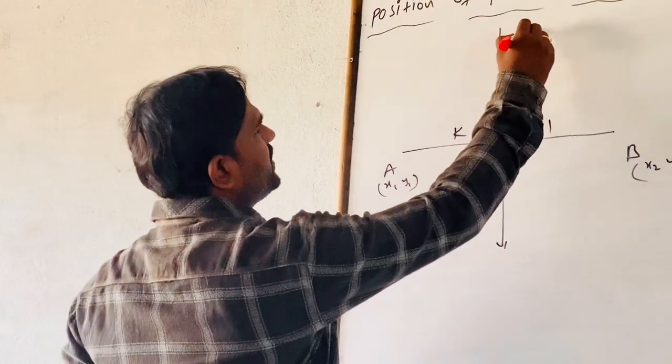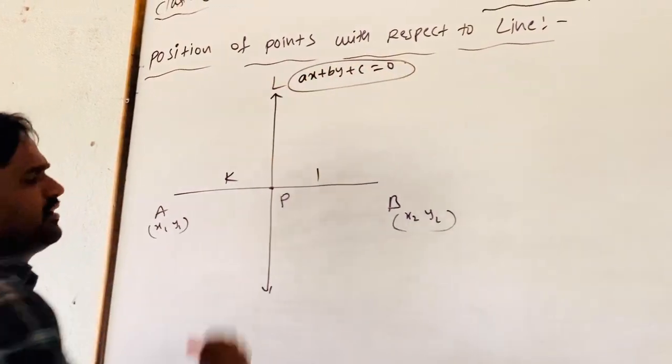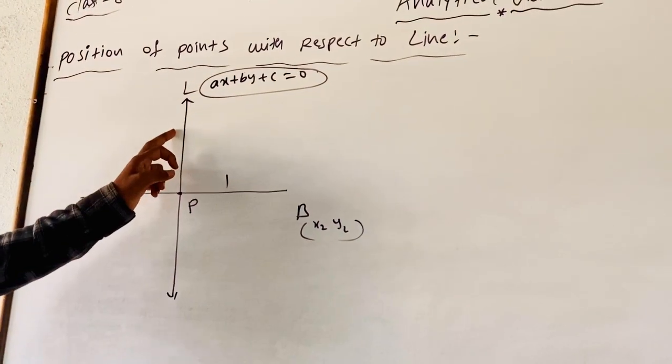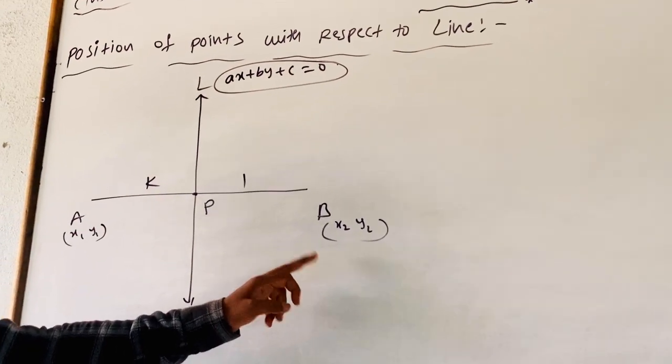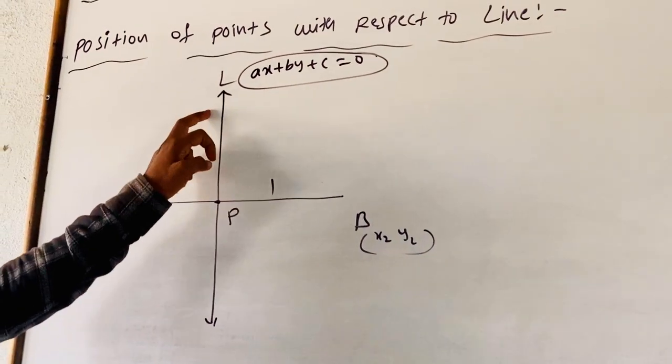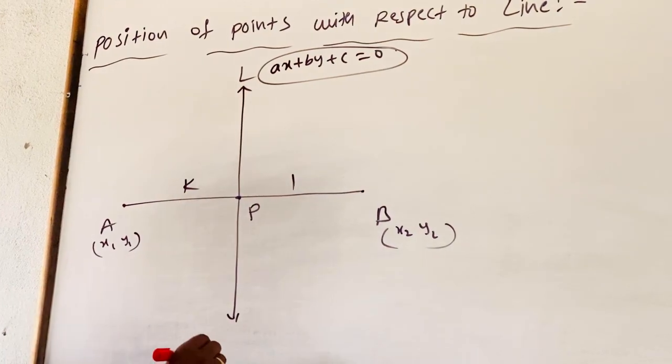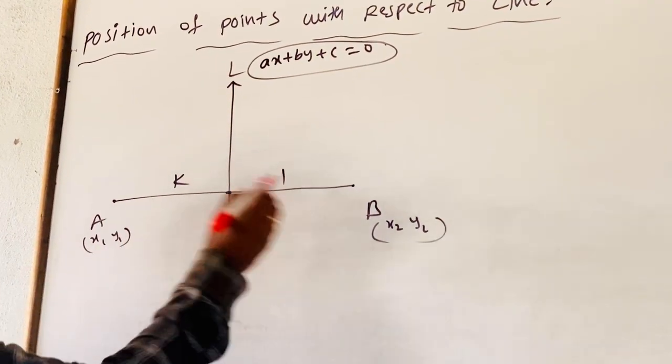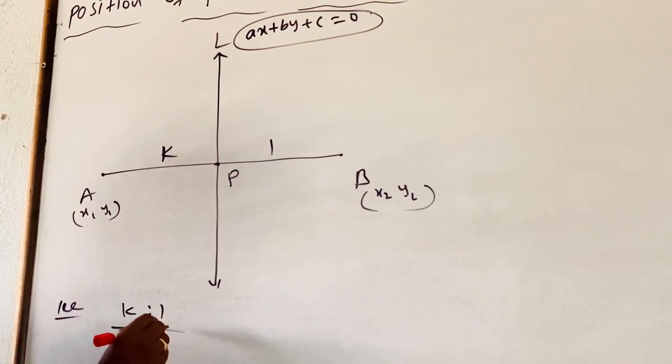Let L: AX plus BY plus C equals 0 be a line. With respect to this line, I am taking two points A(X1,Y1) and B(X2,Y2) which are on either side of L. If A and B divide the line, or the line divides A, B in the ratio K:1.